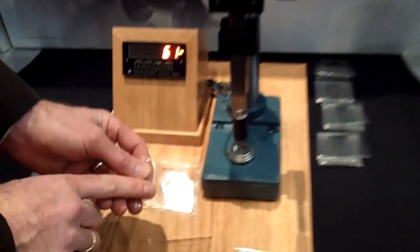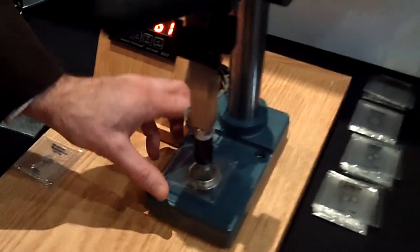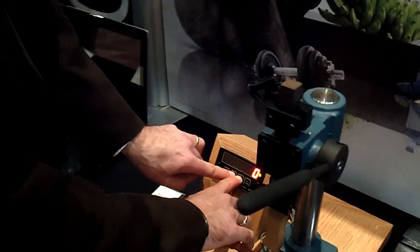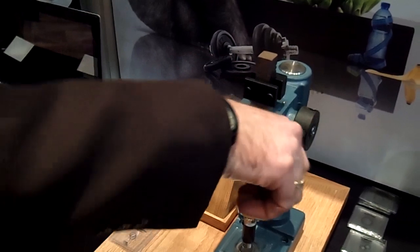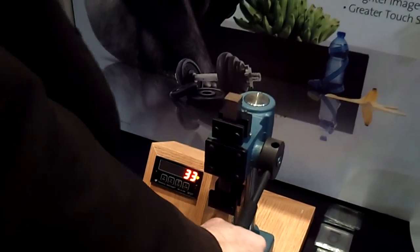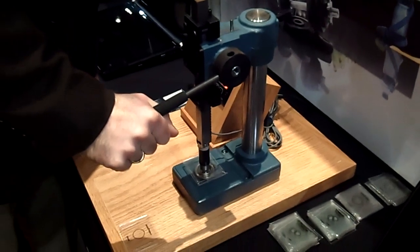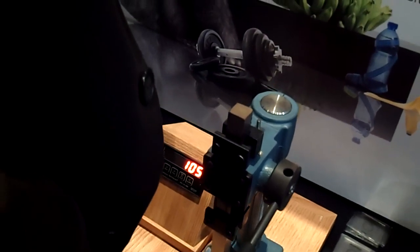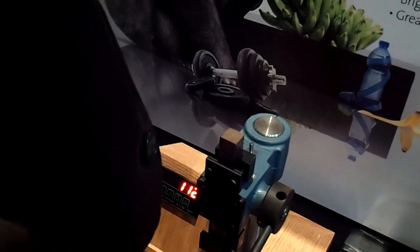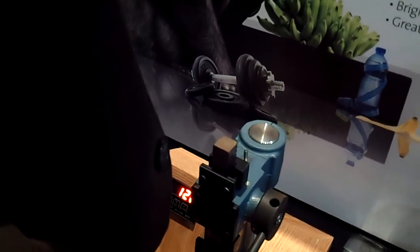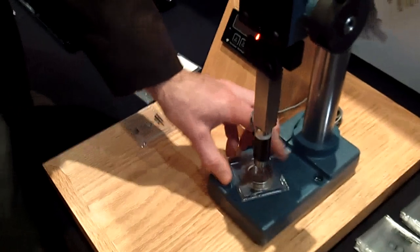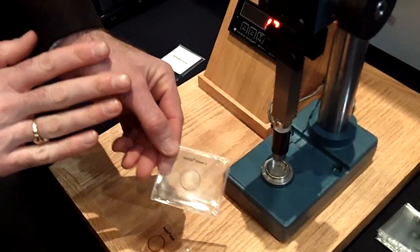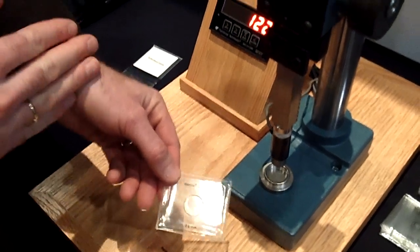Next, we're going to do a one-millimeter piece of Corning Gorilla Glass. This is the current product leading in the market. Go ahead and load this sample up. So, we're up to 80 pounds, 90, 100, 112, 122. Still intact, but Corning Gorilla Glass 2 goes even further. 20% thinner.